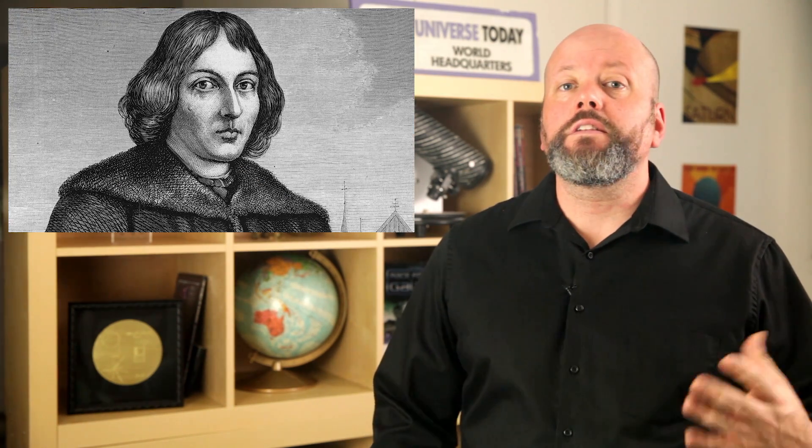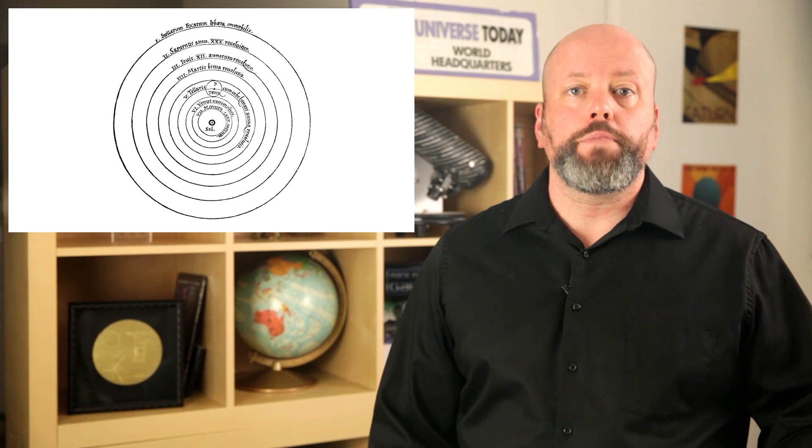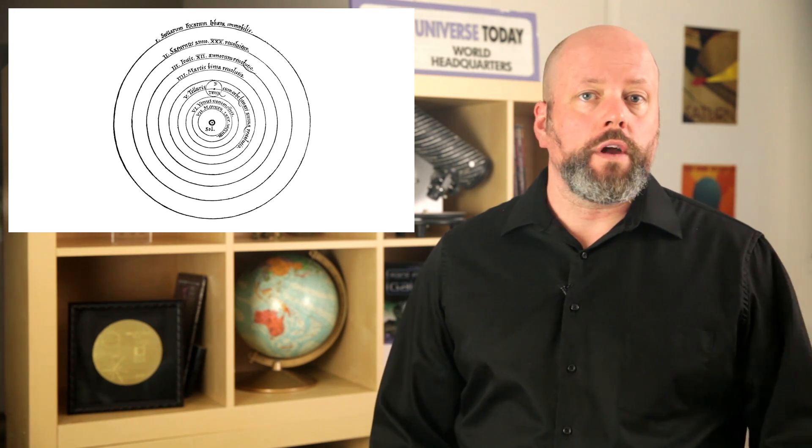The ancient astronomers assumed that the Earth was the center of the universe, and all the planets and even the Sun and stars revolved around us. But, Nicholas Copernicus worked out the true nature of the solar system in the early 16th century. The Sun was at the center of the solar system, and all the planets, including Earth, orbited around it.